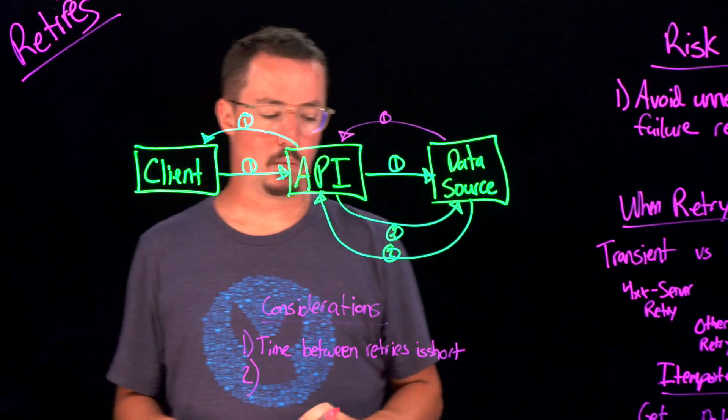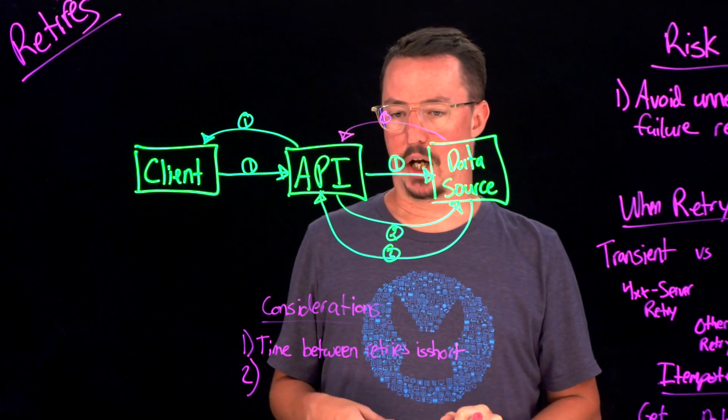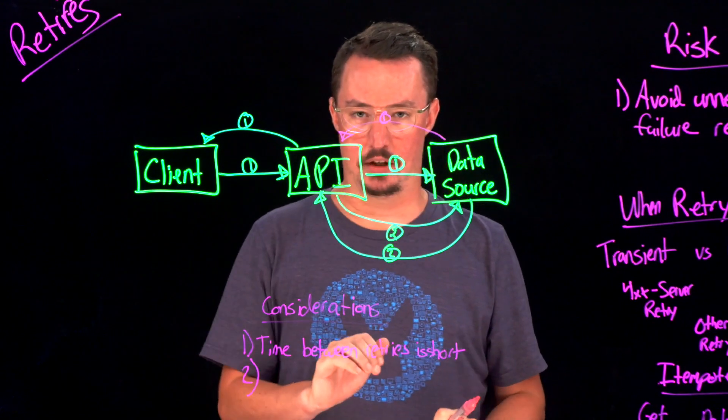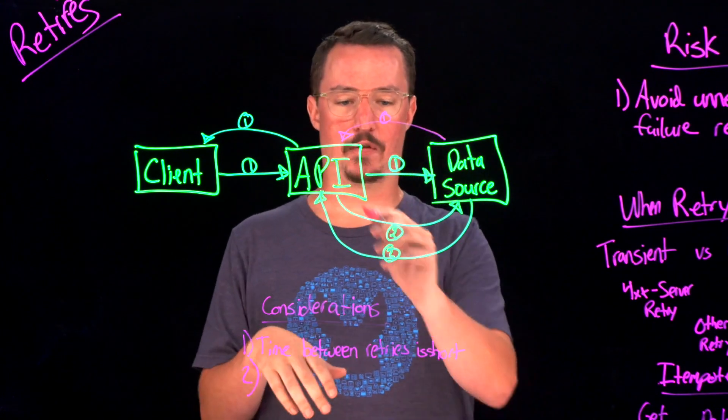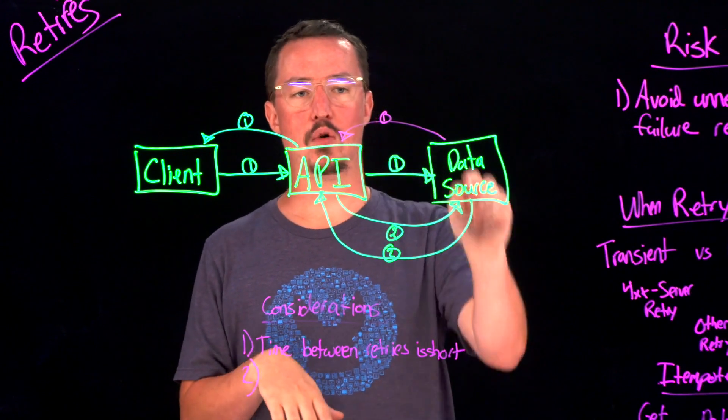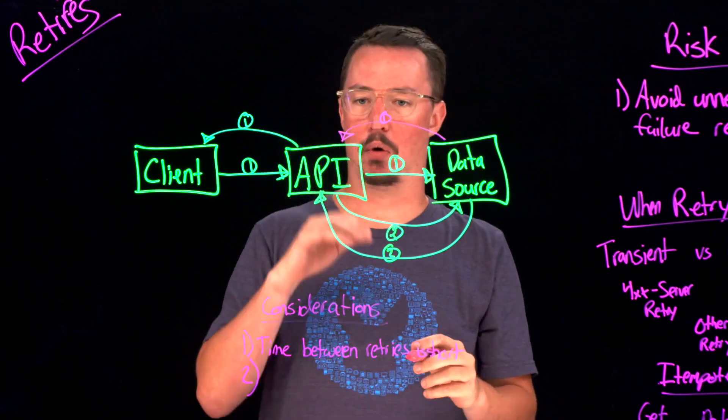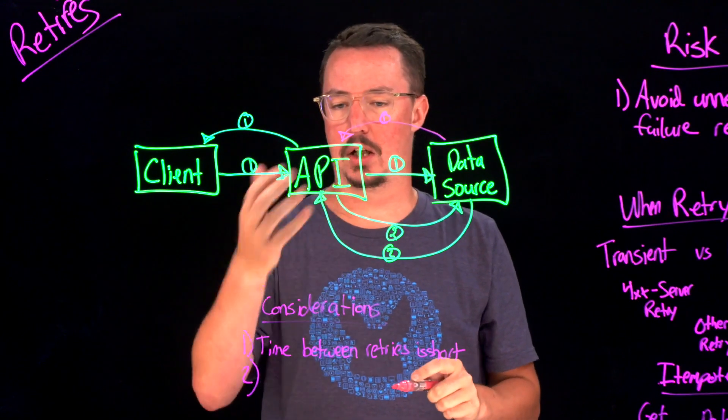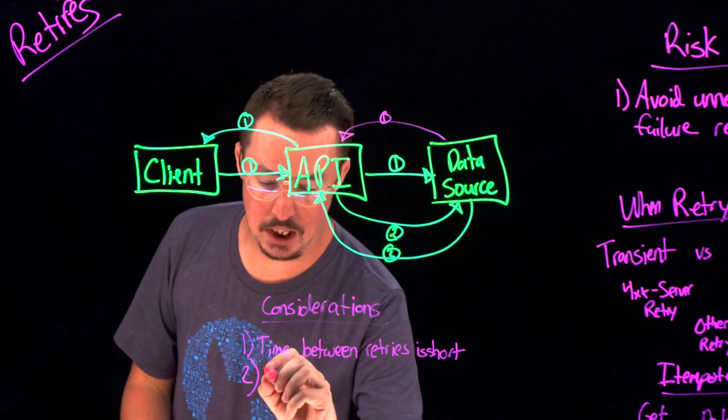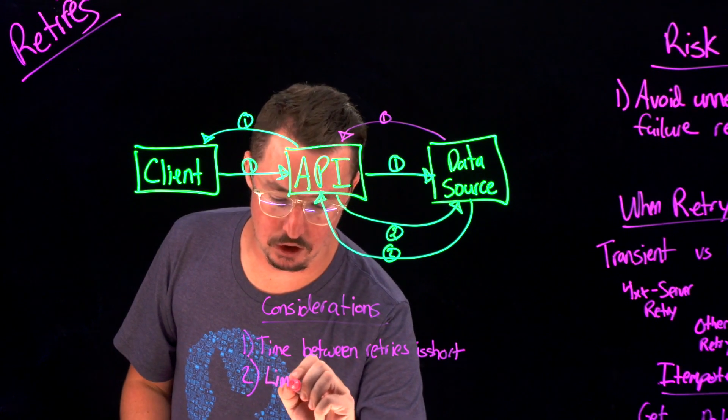You also want to make sure that you have a limited number of retries. So as I'm sure you could tell, if you were to keep going in the same circle over and over and over again and retrying, eventually it's going to time out, or your client, you're going to need to return back a failure message at some point. So you need to have a limited number of retries.